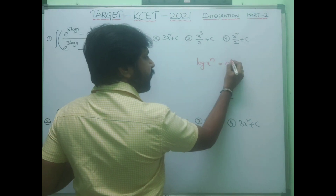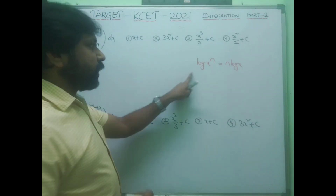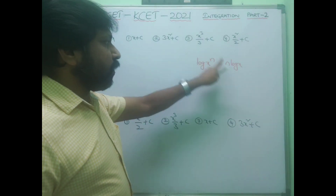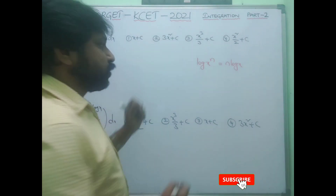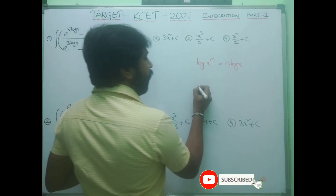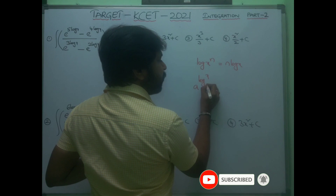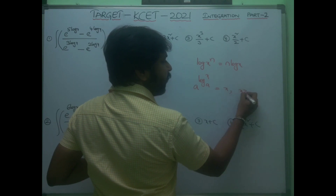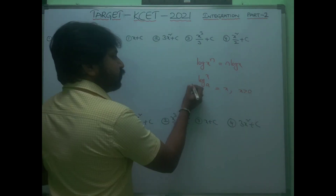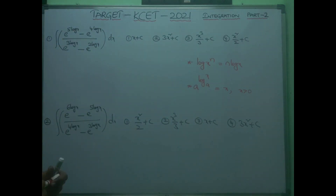The logarithmic concept is: log x^n can be written as n·log x (Property 1). Also, a^(log x) = x, where x must be greater than zero. Based on these two properties you can solve this kind of sum very easily.